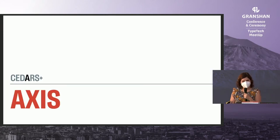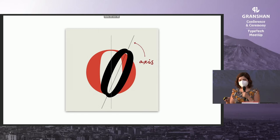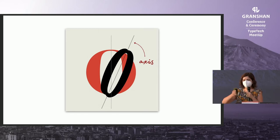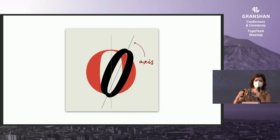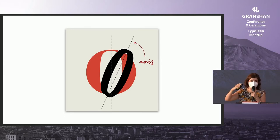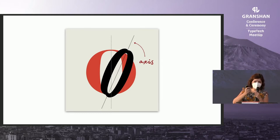And then we have the A — the axis. It is vertical, it's at an angle, and in some cases it's variable. For example, in typical Naskh traditional typefaces, it's variable because we don't hold the pen at the same angle the whole time — we rotate the nib as we go. So there is a variable angle.